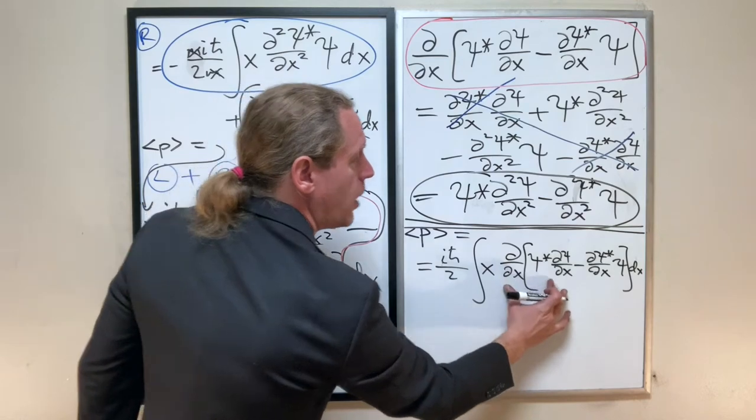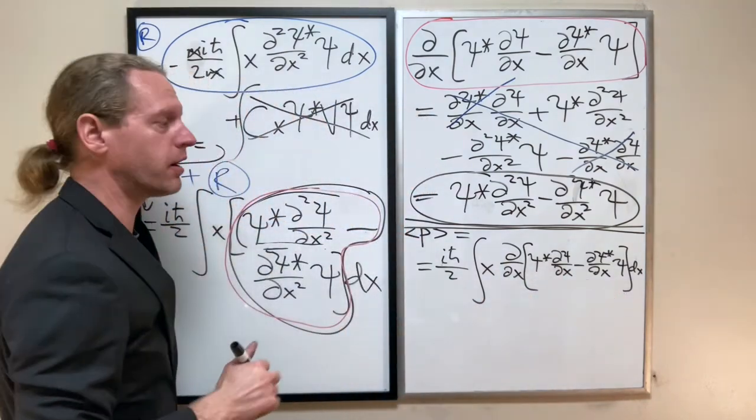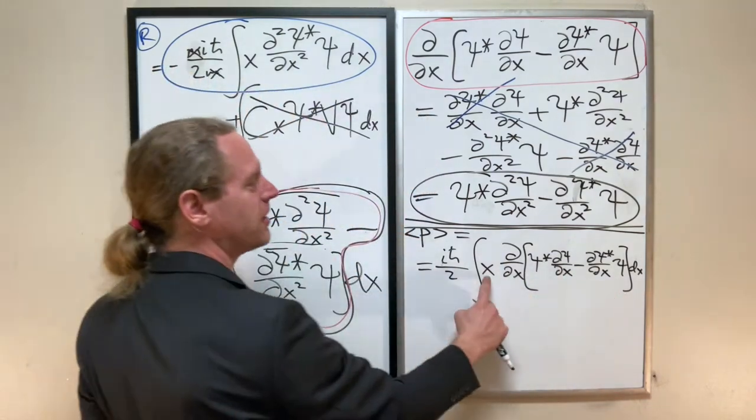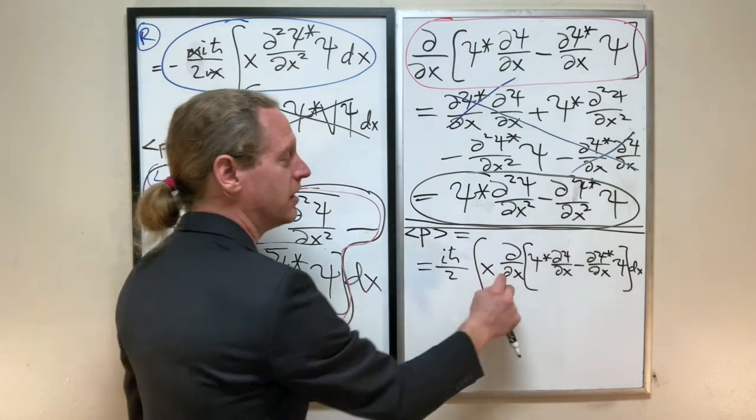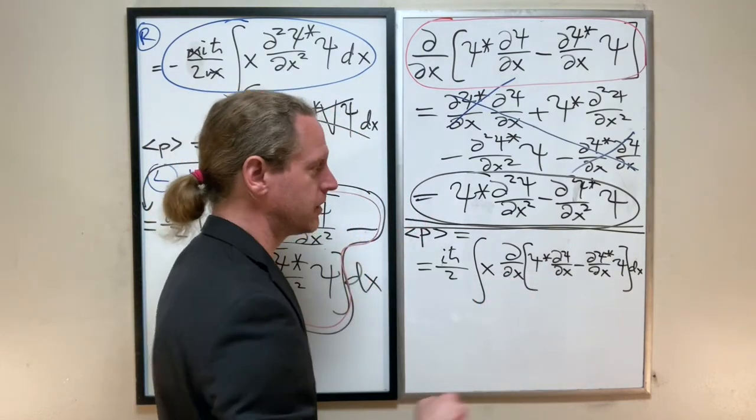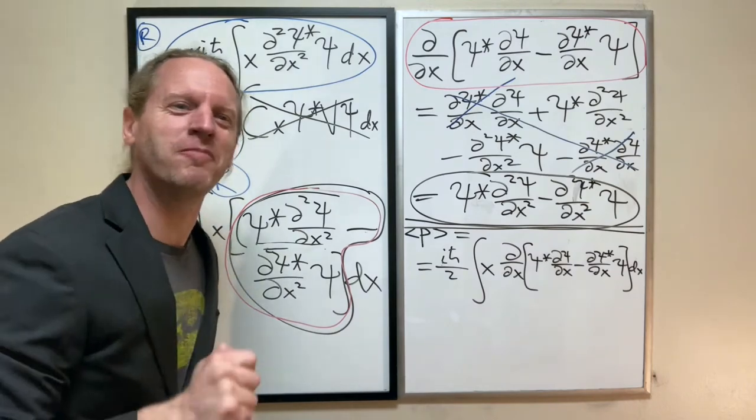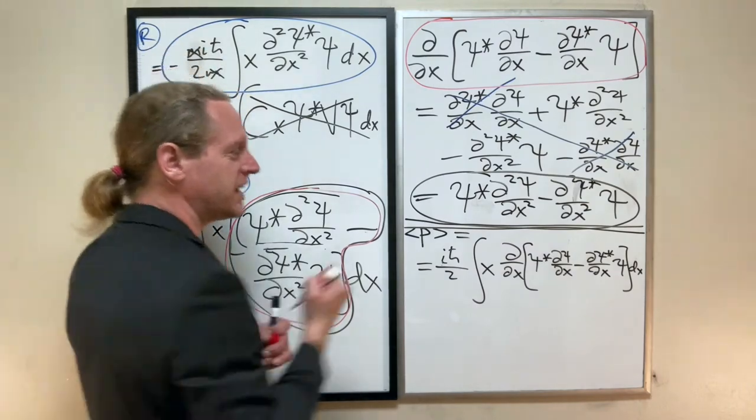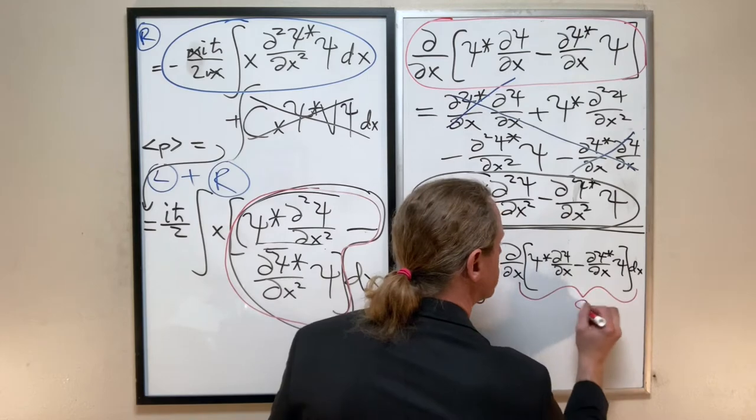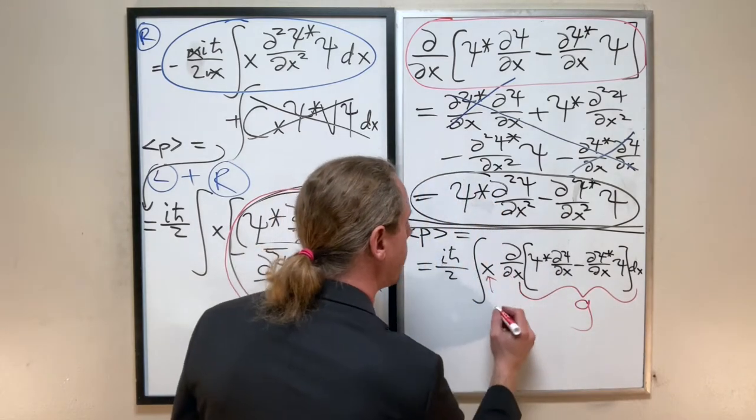But what we now have here, and this is the important part, it's a function times a derivative of a function dx. Do you see what to do now? Think of all this crap as g, think of that x as f.